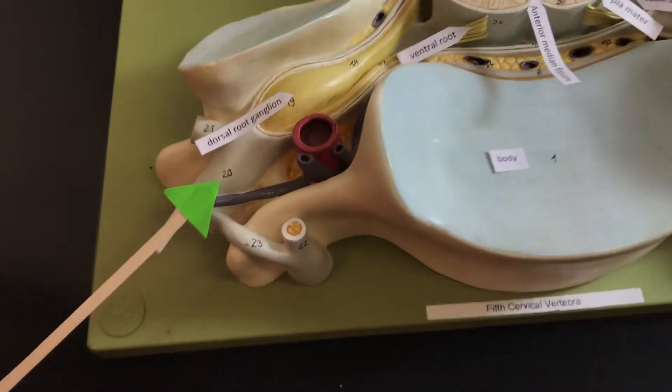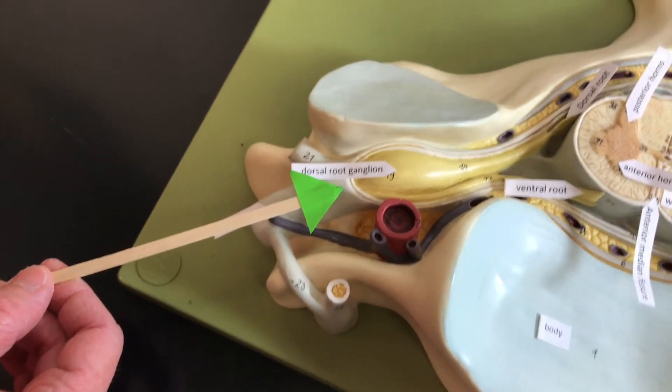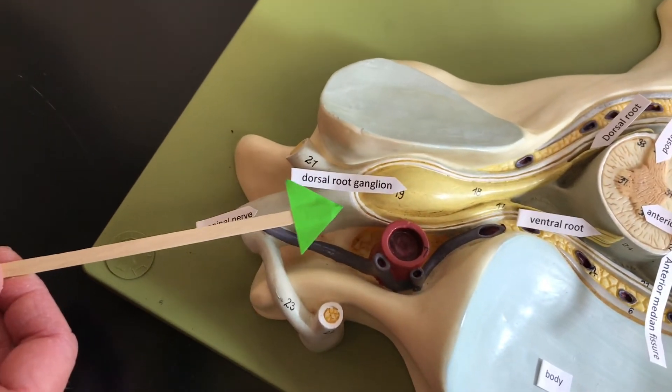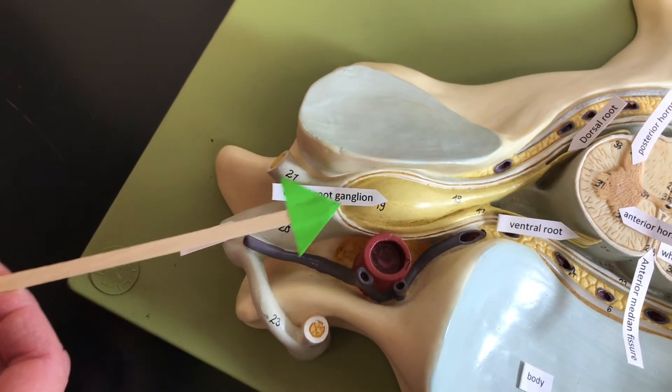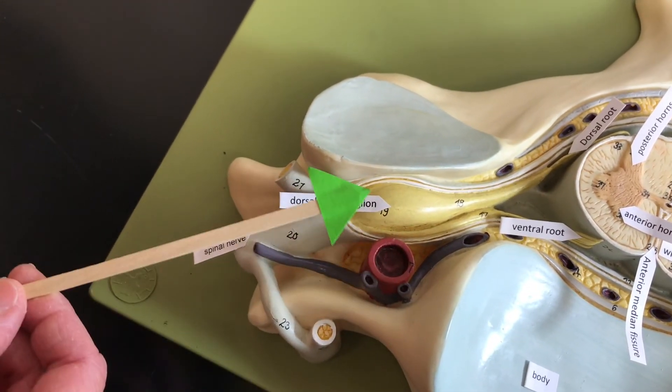The spinal nerve has sensory and motor neurons. And they are going to enter the vertebral column through the intervertebral foramen. It's just a hole in between the vertebrae.